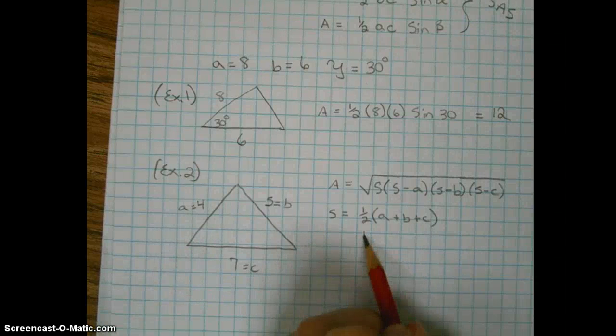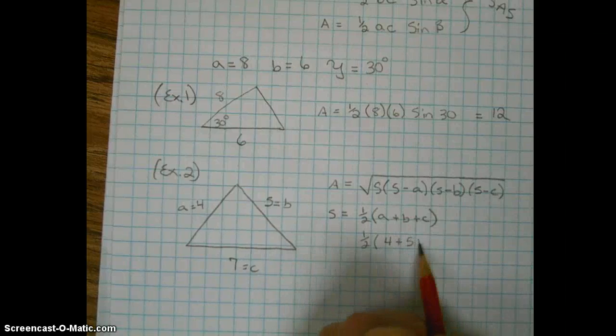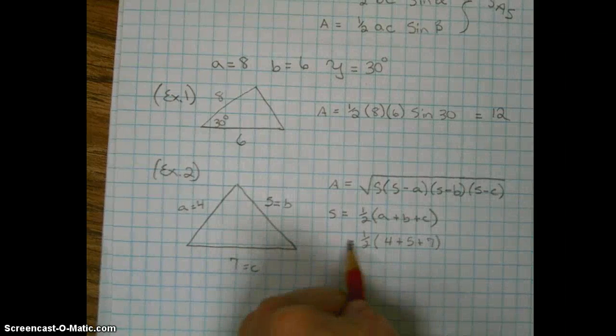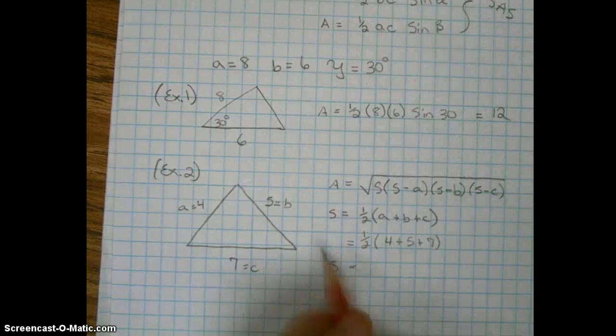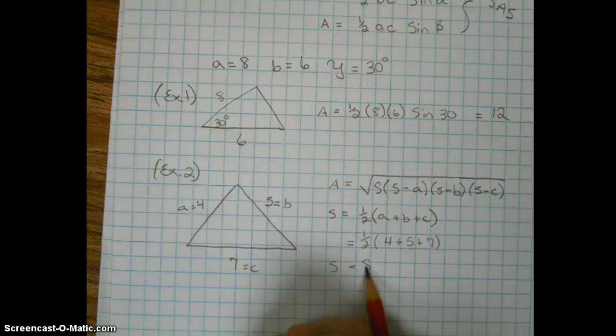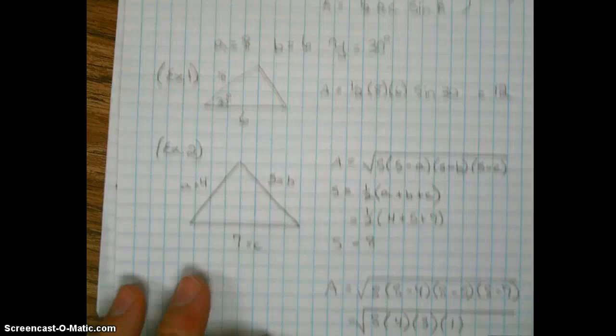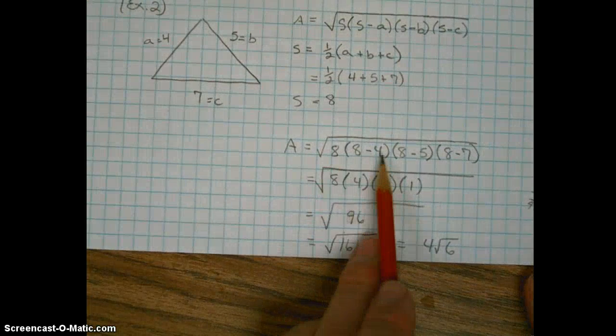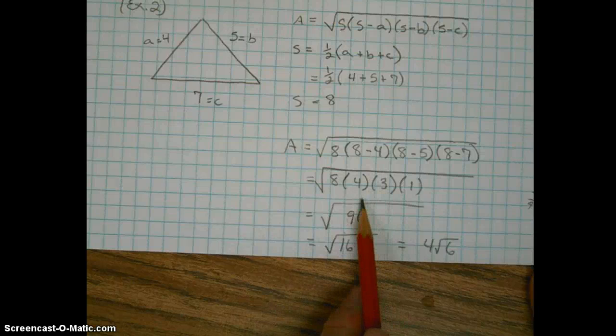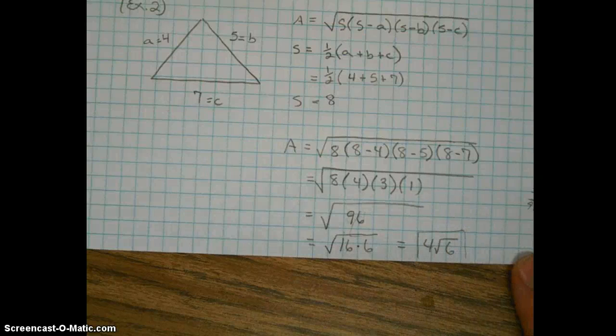So we're going to have one-half, four plus five plus seven. So S equals, let's see, 16, so eight. Okay, now that we know what S is, we go ahead and plug it into this formula. And this is the calculation right here, all the way down to the square root of 96. Simplify that. So the area is four radical six units squared.